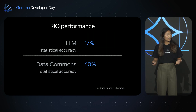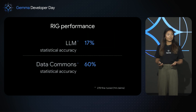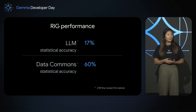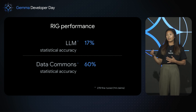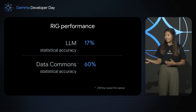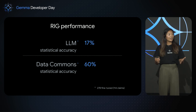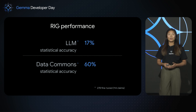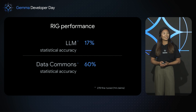In our evaluations of Retrieval Interleave Generation, we looked at statistical claims in responses where we had a value from the LLM and a value from Data Commons. The original LLM answers were correct only 17% of the time, while the Data Commons value was accurate 60% of the time. These are still very early results, but very promising, and we are continuing to improve upon this.